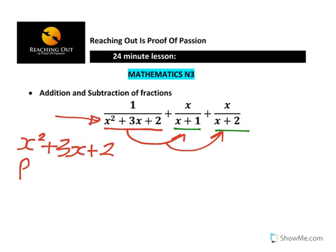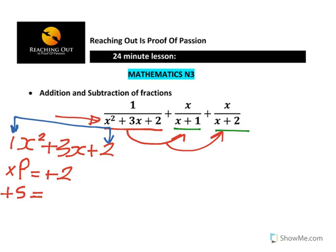The product-sum method says: product means multiplication. I have a 1 there, so I multiply 1 times 2. My product is 2, a positive 2. And my sum — the number at the center — is positive 3.